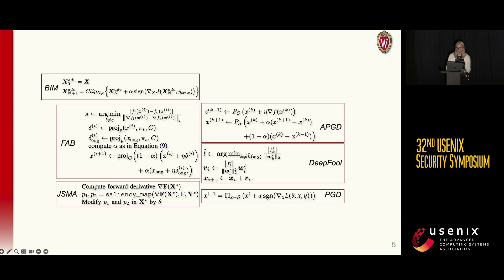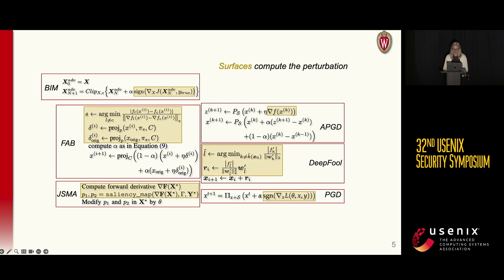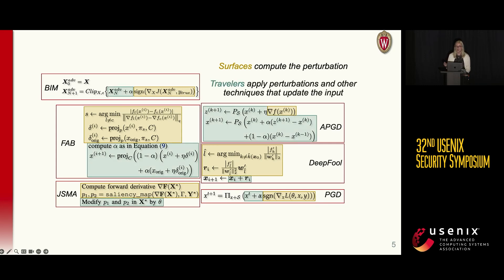We begin this systemization by breaking down seminal attacks in adversarial machine learning, a few of which are shown here. By identifying the similarities and differences between these algorithms, we can begin to form a generalization of what makes an attack an attack. Our first observation is that all attacks follow a common pattern — portions of these attack algorithms contain surfaces, which compute perturbations, as well as travelers, which apply those perturbations, as well as other techniques that update the input and aid in optimization.